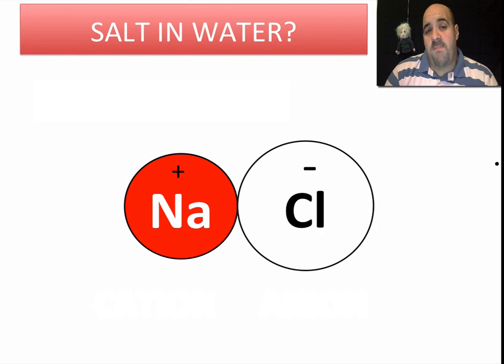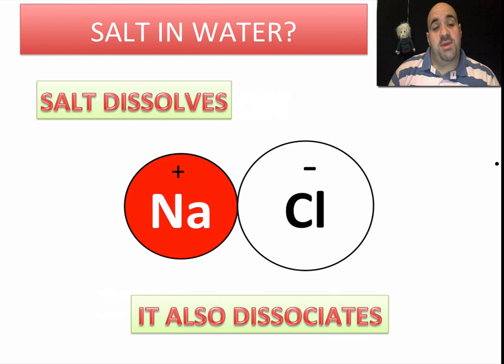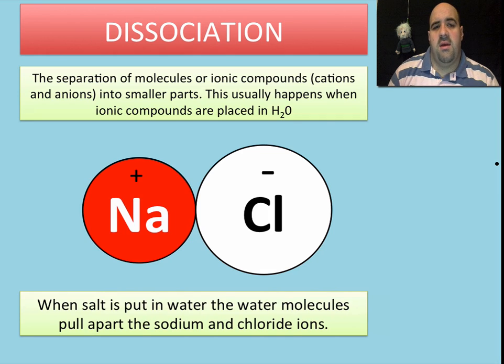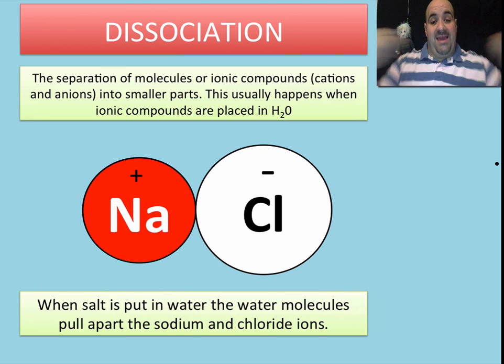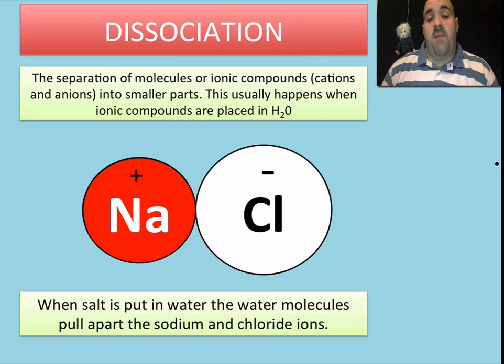So we're going to look at what happens to salt when we put it in water. We know that salt dissolves, but it also dissociates. And what does that really mean? Well, dissociation is the separation of molecules or ionic compounds into smaller parts. It's basically tearing it apart. Just as I tore the piece of paper apart, you're going to tear the Na from the Cl. Well, the water molecules essentially are going to pull the sodium and chlorine away from one another.